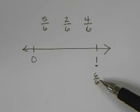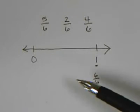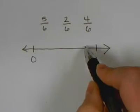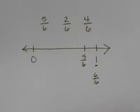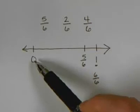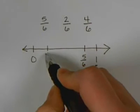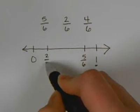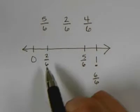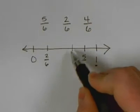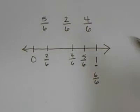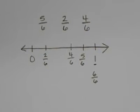5/6 would fall before 6/6, so we can place that on the number line. 2/6 falls closer to 0, so we can place that on the number line. And 4/6 comes between 2/6 and 5/6, so we can place that on the number line. Pretty easy. Let's move to the next one.